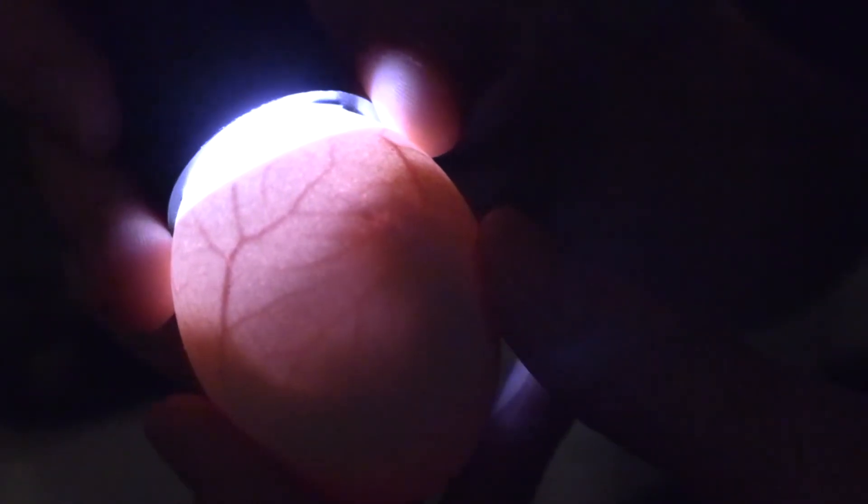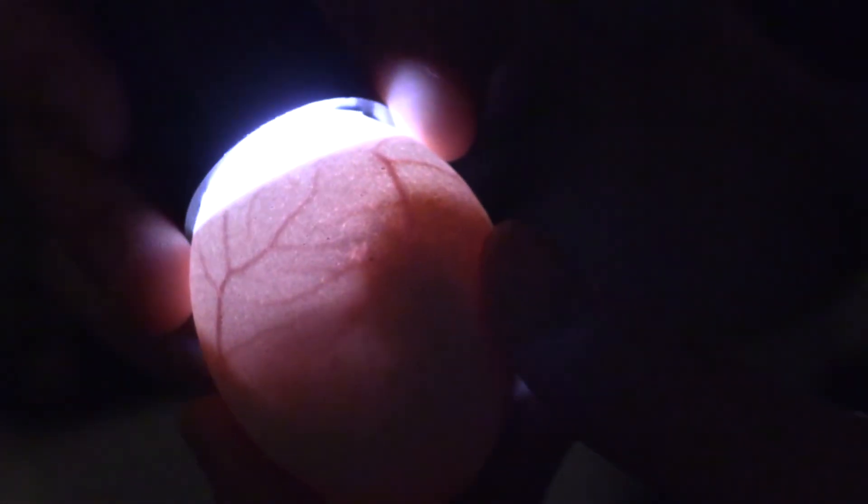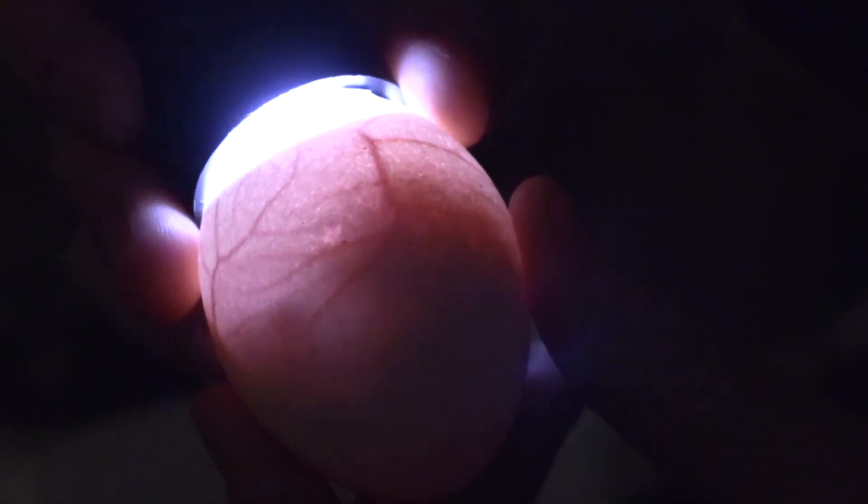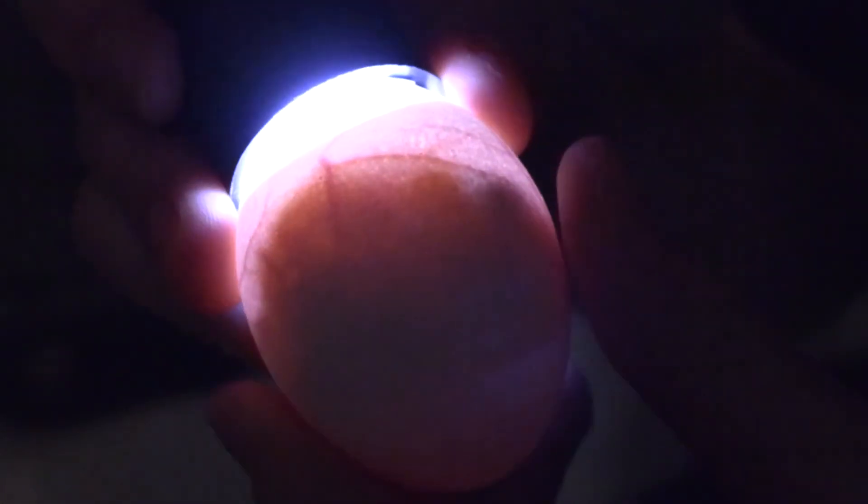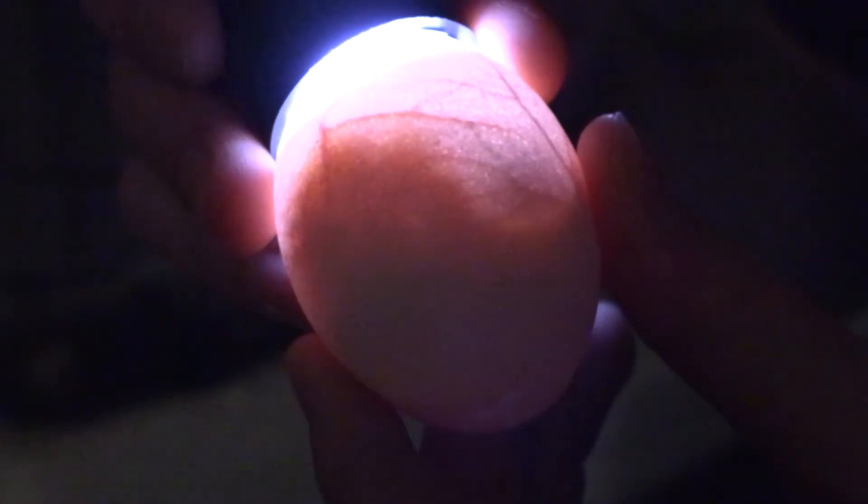At this stage of development we will never find a yolker in our incubator because they have been culled or removed from our incubator when we did day 7 of candling. You can see the eye as I rotated a little bit there.